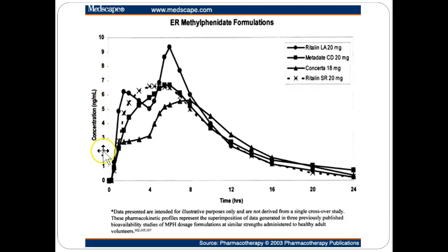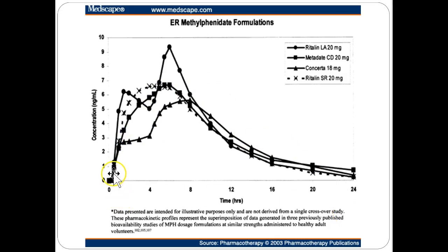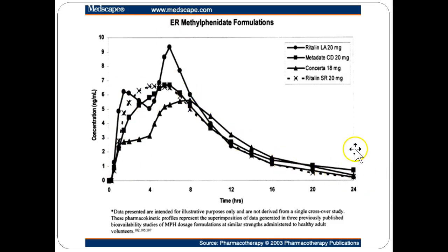Looking at the difference in onset of methylphenidate formulations on this graph: Ritalin SR shows a standard dose-response curve. Concerta shows an initial peak, then a delay and slow increase, then a secondary peak — this prevents a more substantial initial peak while providing a boost later. Ritalin Long Acting shows a big peak that tapers off very quickly. You can see why some products might be preferred based on their different peak effects.